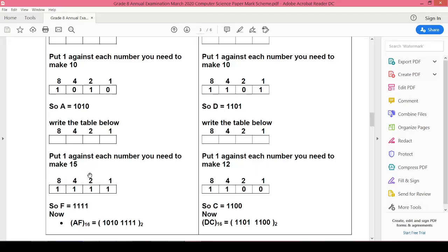8 and 4 is 12, 12 plus 2 is 14, and 14 plus 1 is 15. It means we'll put 1 here, 1 here, 1 here, and 1 here. So the binary equivalent for F is 1111.